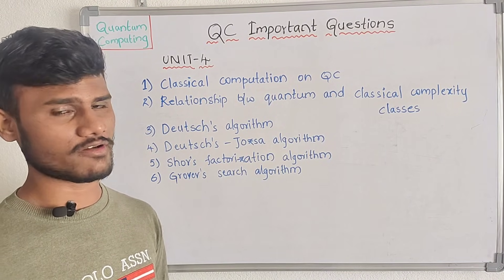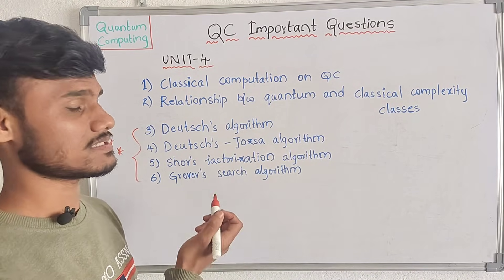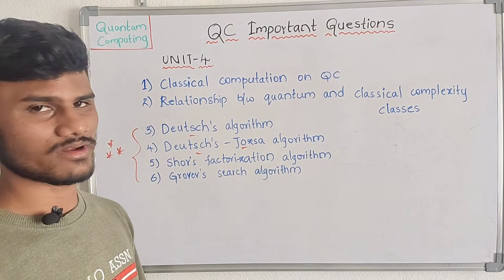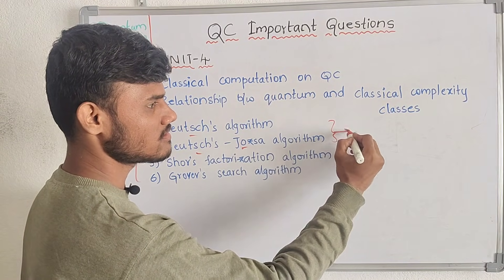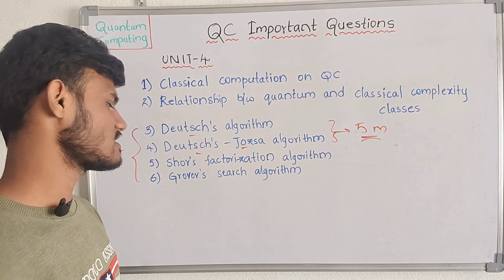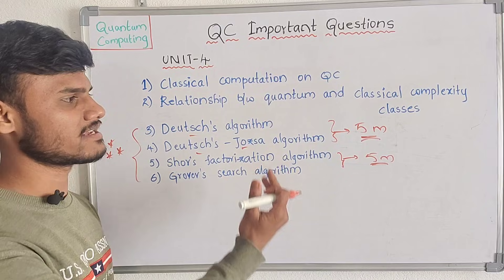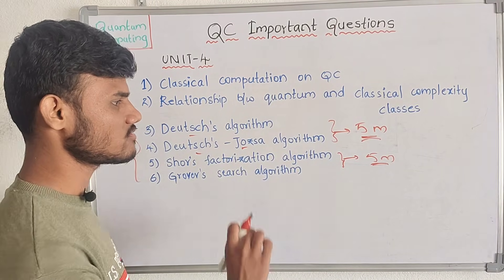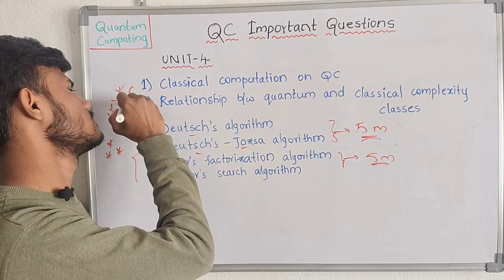Now, coming to our fourth unit. This fourth unit is completely about algorithms. These four questions are algorithms. The algorithm name is Deutsch's algorithm — this is the same algorithm in the French Center. These two algorithms exist and you will definitely get 5 marks. Next is the Shor's factorization algorithm. Grover's search algorithm is worth 5 marks — definitely 5 marks. Next is 10 marks.